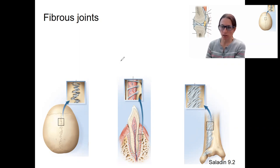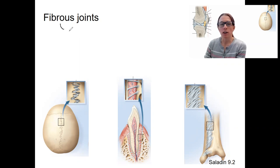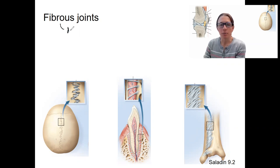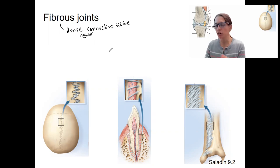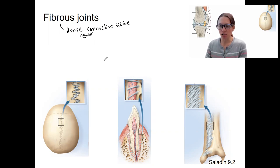The first type of structural classification I'll talk about is fibrous joints. These are joints where two bones are connected by a dense fibrous connective tissue — typically dense regular — so it's a pretty parallel fiber situation. There are three types of fibrous joints.